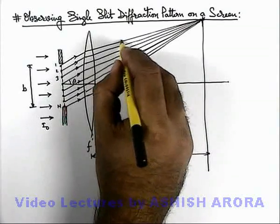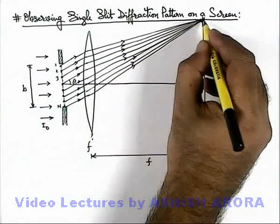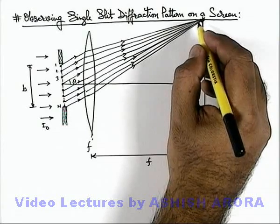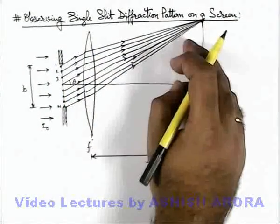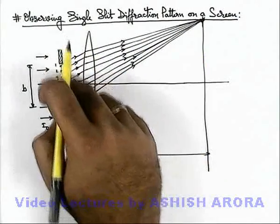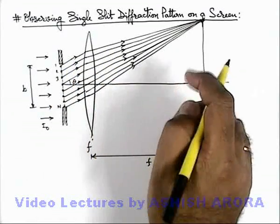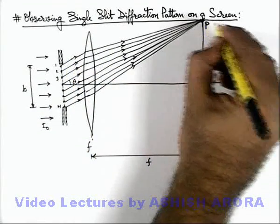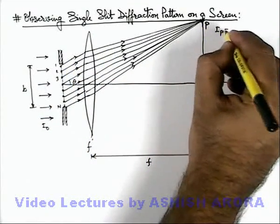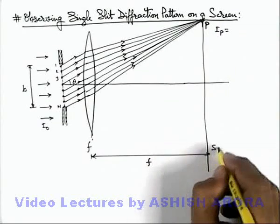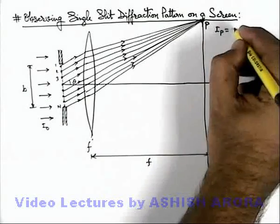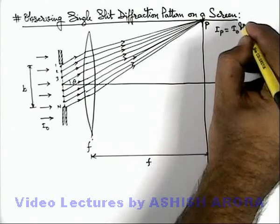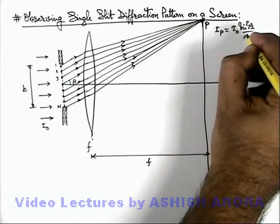And will superpose and produce the same intensity which will be produced when these light rays will be meeting at infinite position or distance from the slit in absence of the lens. So this is the point P where I can write intensity at point P on screen. This will be given as i not sine square beta by beta square.